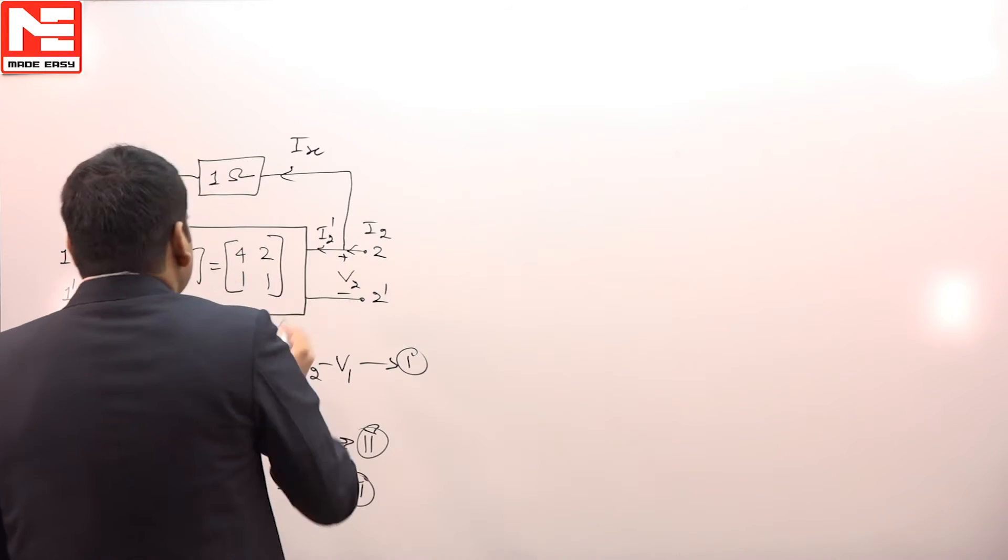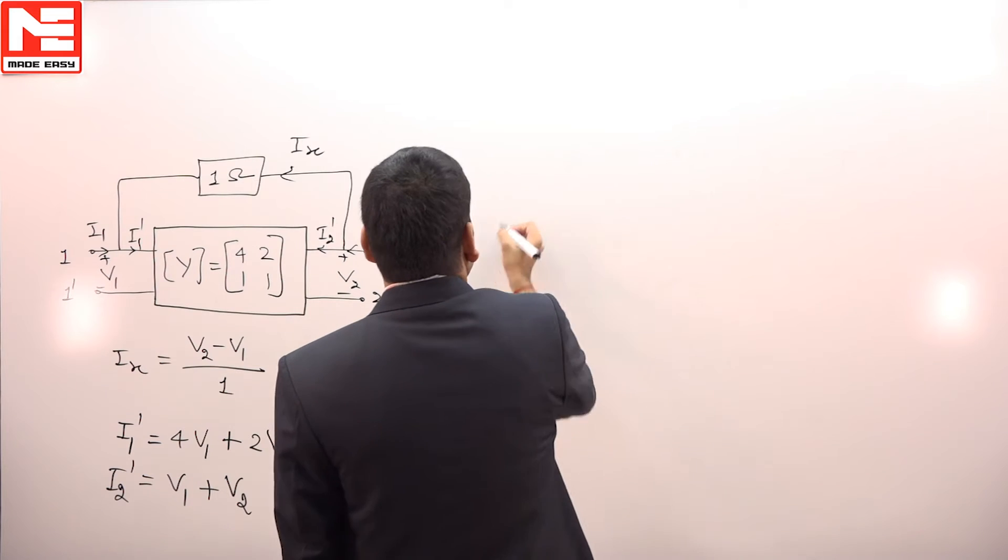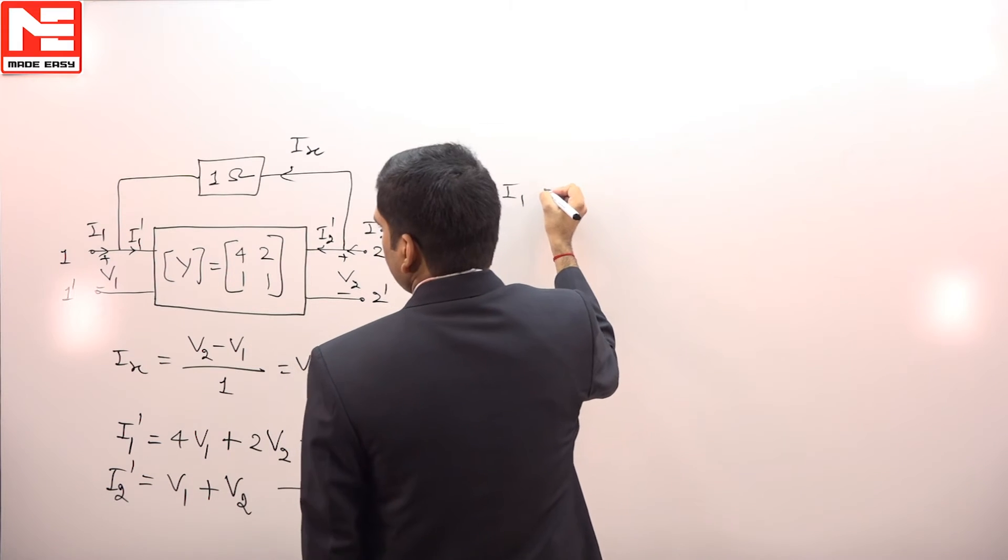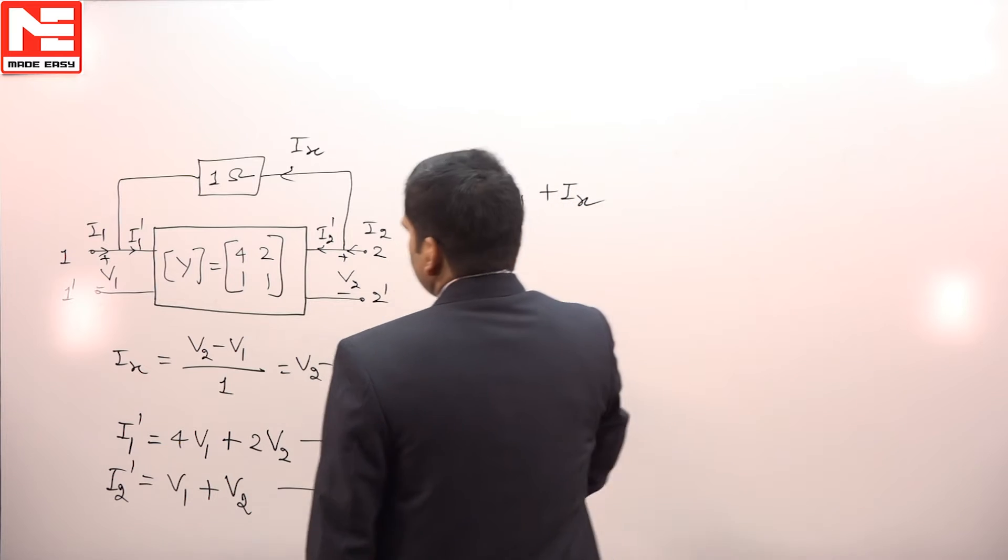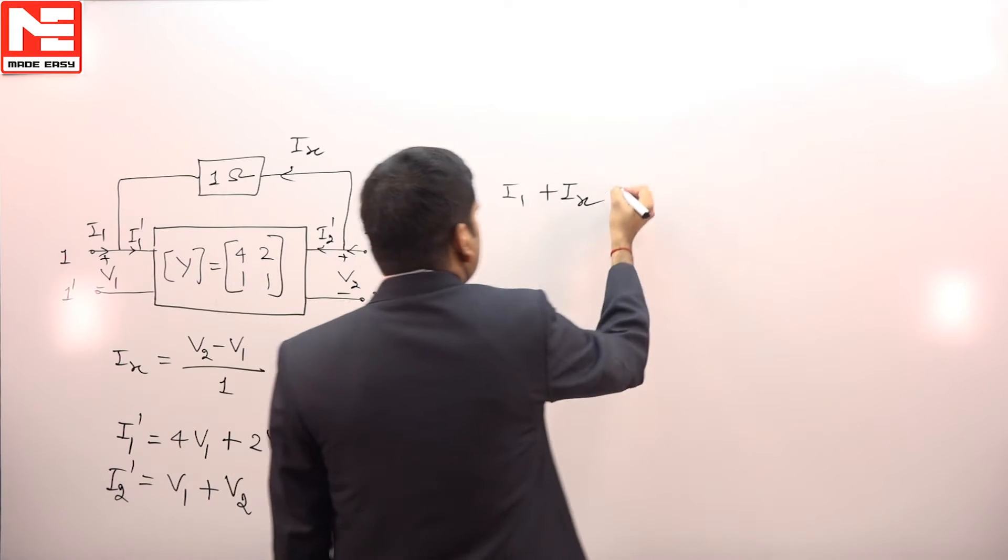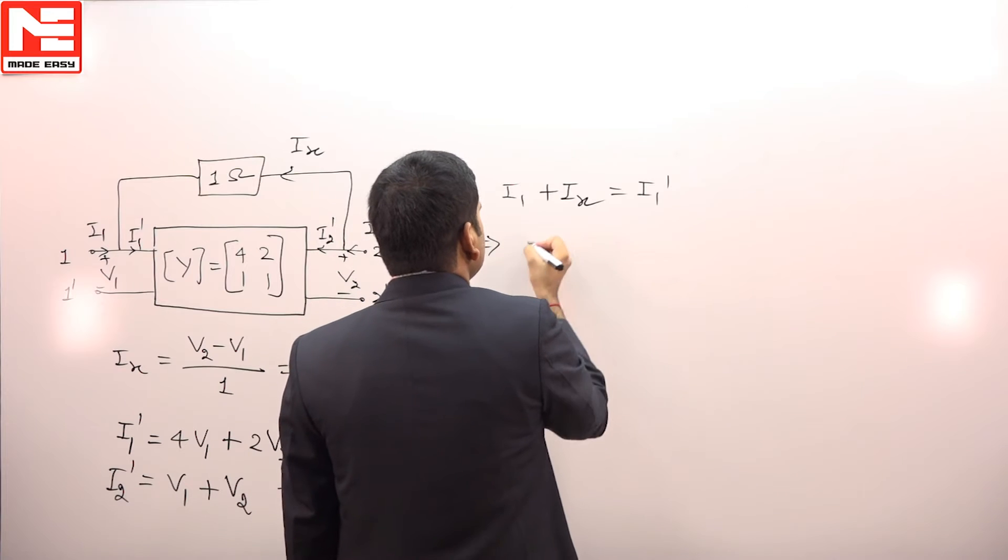Now if we apply KCL at this point, then we have i1 entering and ix also entering. These two equal i1 dash outgoing. So from this, i1 is equal to i1 dash minus ix.